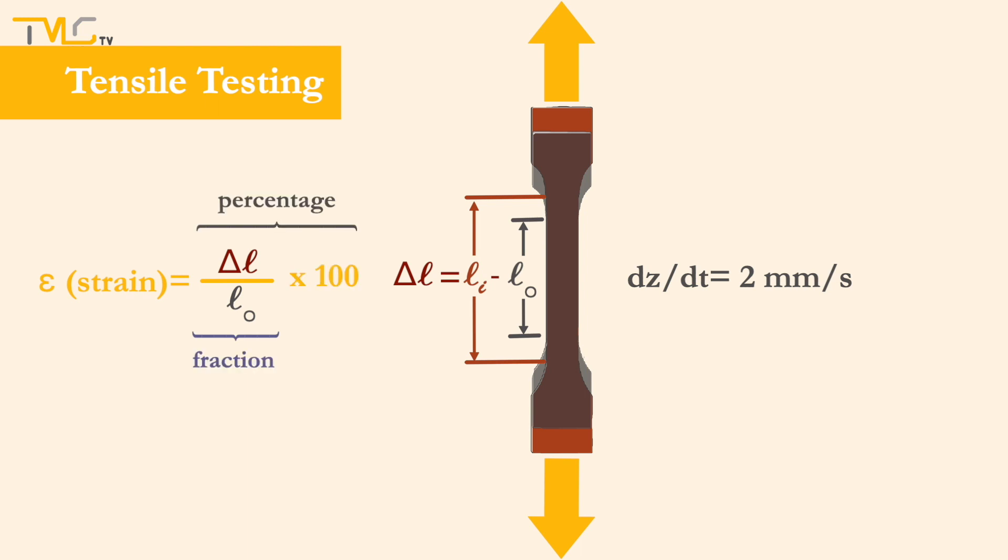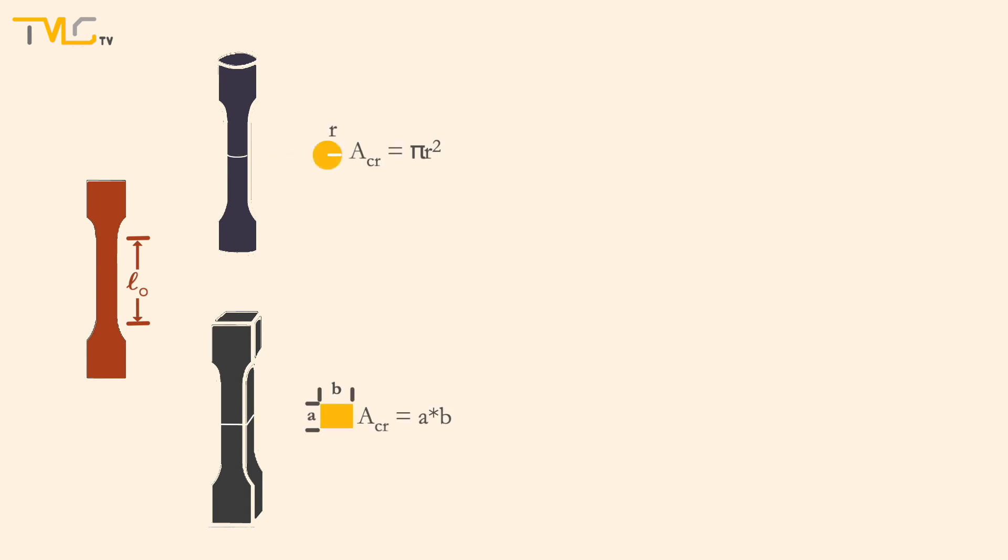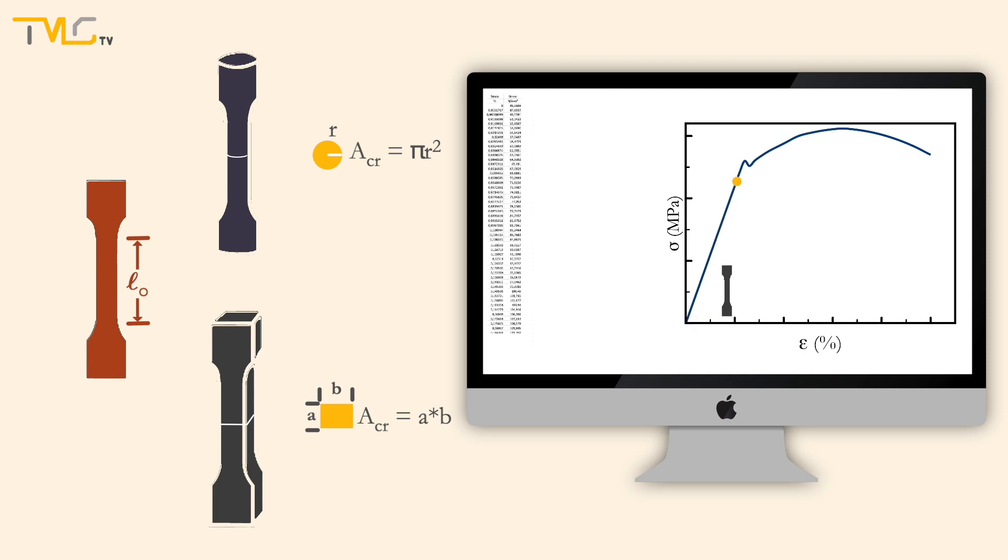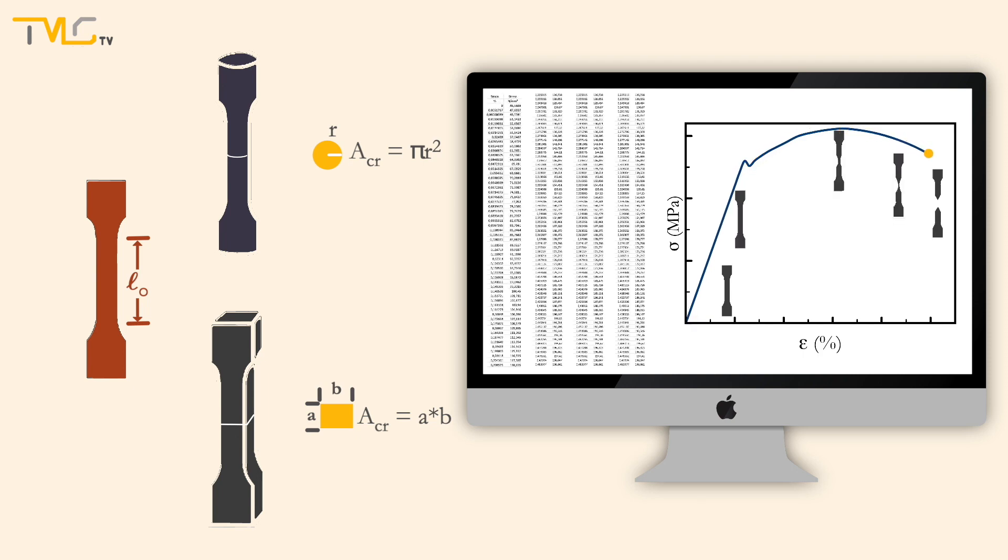Now let's dive into the details about stress and strain. Before starting the test, the gauge length and initial cross-sectional area of the specimen are measured in high precision. During tensile testing, applied loads and actual elongation are monitored and recorded continuously until the specimen fails. At the end of the test, the collected loading and elongation data are used for calculating stress and strain values, and the stress-strain curve is plotted.